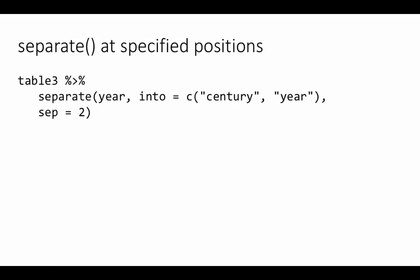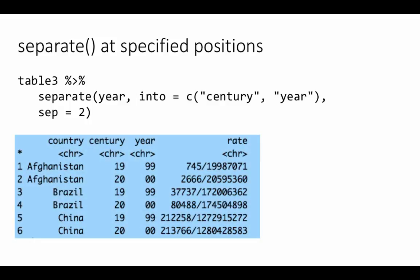We can separate at a particular position. Table 3 has a column called year, which is like 1995, 2000, and so on. Let's say we want to separate out the century portion and the actual year portion into, for example, 19 as the century and 95 as the year. We can do that by specifying not a separate character, but a position at which to perform the separation. After the second position, perform the separation.